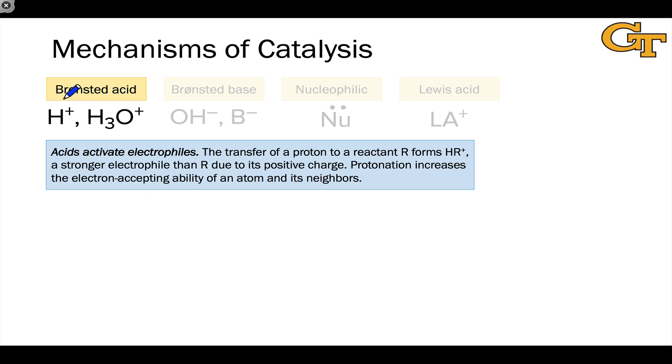The first mode of catalysis I want to look at involves the use of a Bronsted acid catalyst. Typically, because strong acids come along with water as a solvent, we'll represent these as H3O+, particularly when we're thinking about the active catalyst species, which is almost always the hydronium ion.